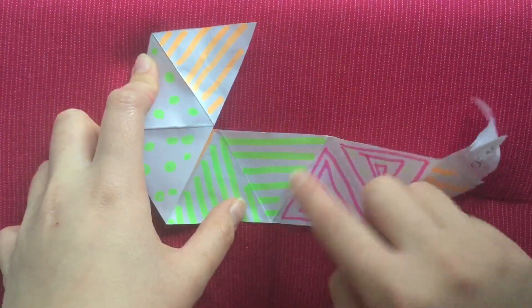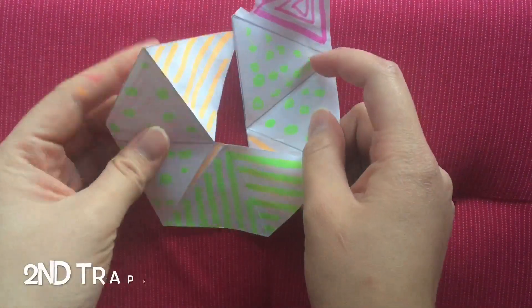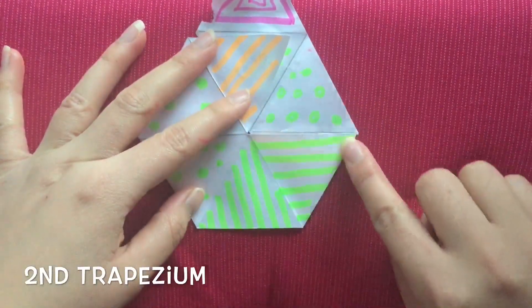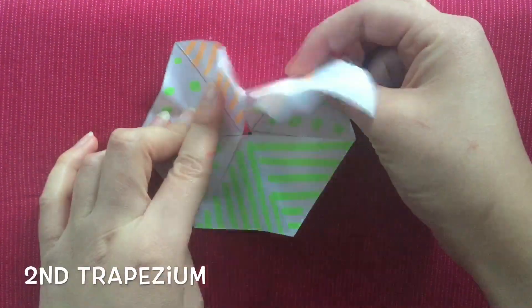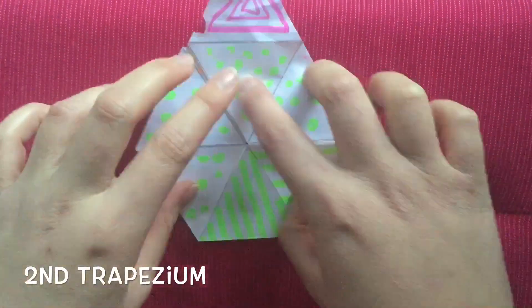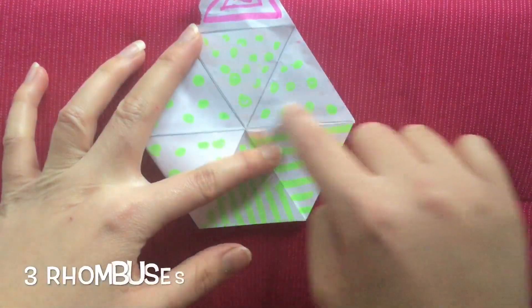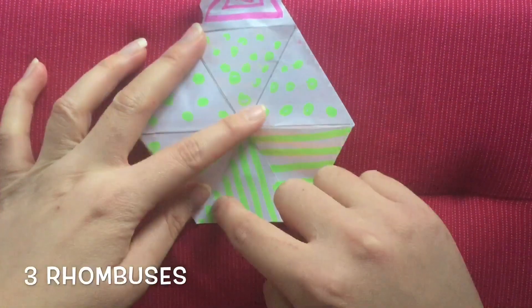Fold where this crease is and then bend it upwards. So now you should have an additional trapezium and flip this paper over the orange. Now you should have three different rhombuses that are flat.